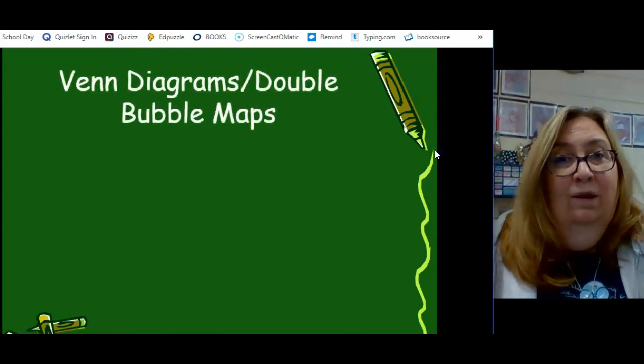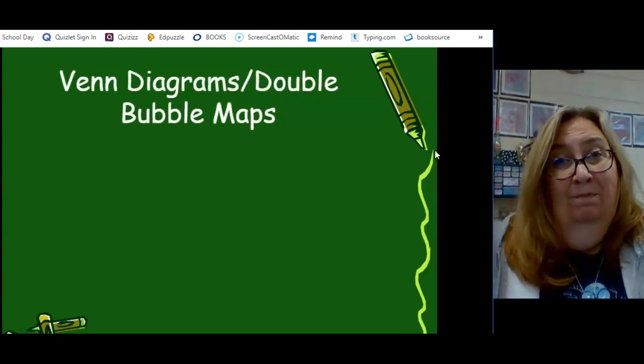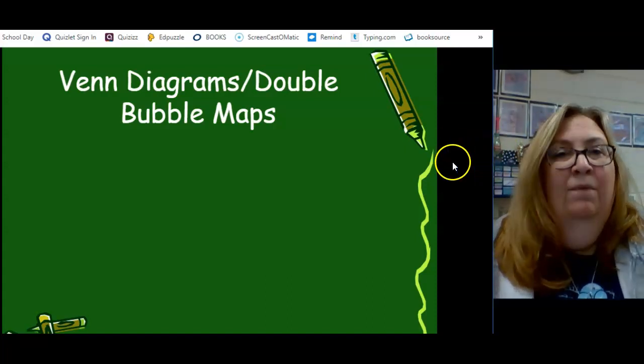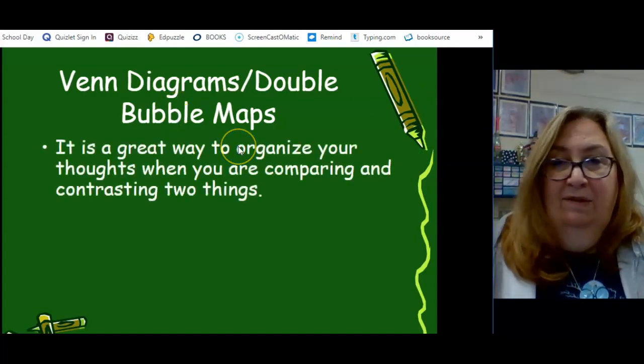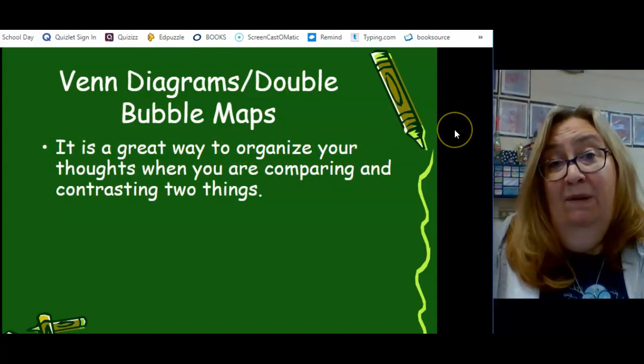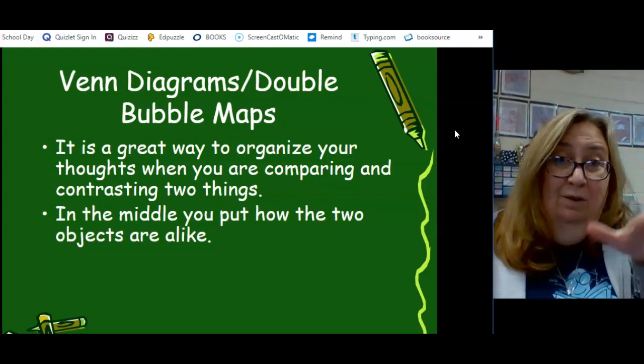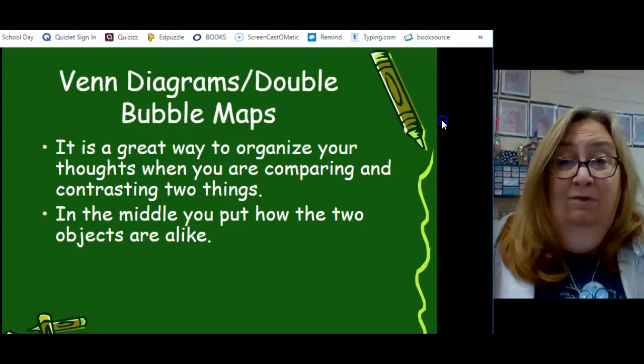So, one of the ways that we show how things are alike and different in a picture form would be here in a Venn diagram, or you might have heard this called a double bubble. A double bubble is a great way to organize your thoughts when you're comparing and contrasting because it uses one picture to show how things are alike and how they're different. And it's in the middle where the circles combine that you show how the objects are alike.